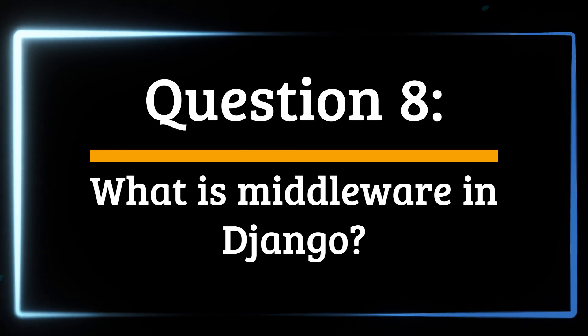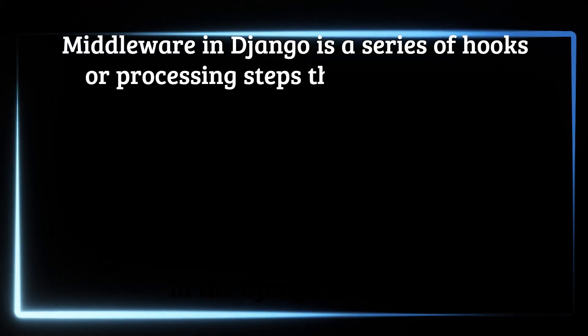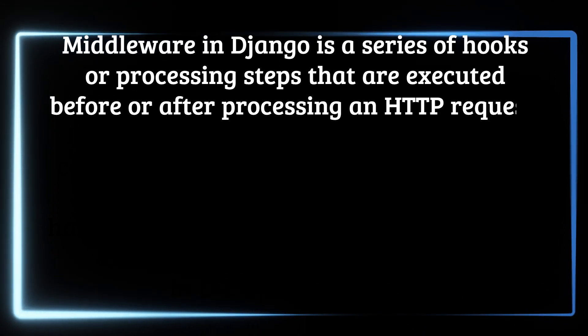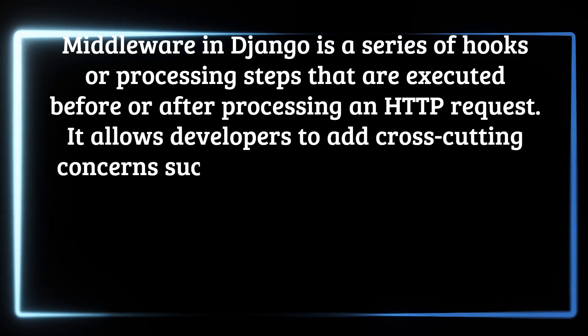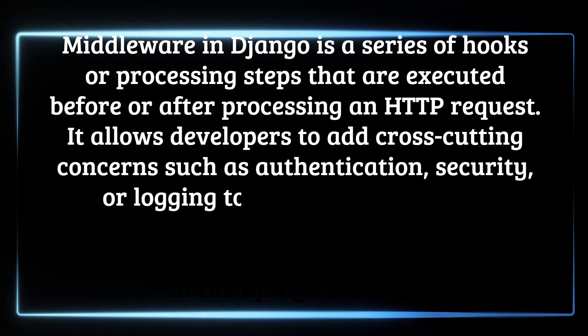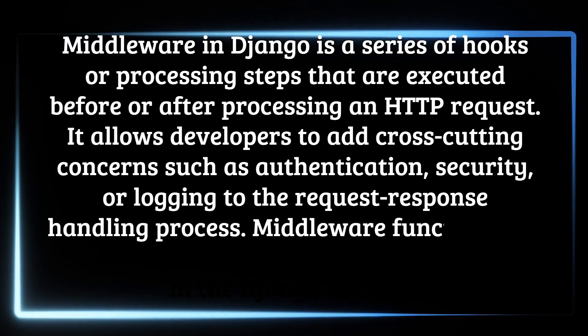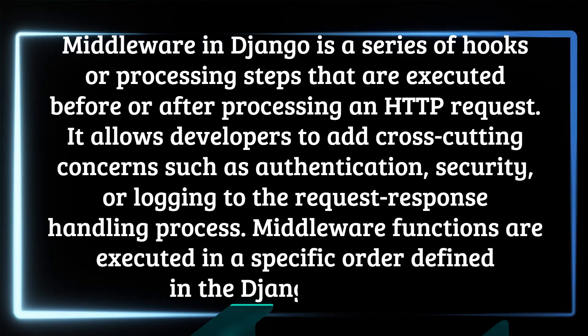Question 8: What is middleware in Django? Middleware in Django is a series of hooks or processing steps that are executed before or after processing an HTTP request. It allows developers to add cross-cutting concerns such as authentication, security, or logging to the request-response handling process. Middleware functions are executed in a specific order defined in the Django settings.